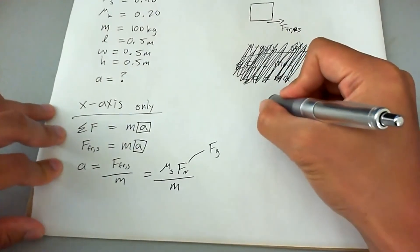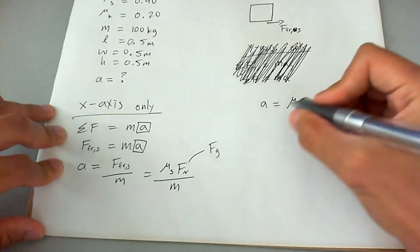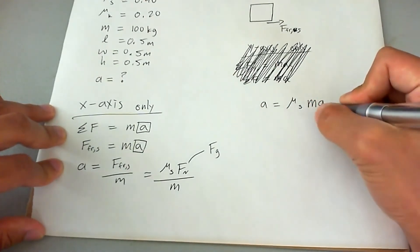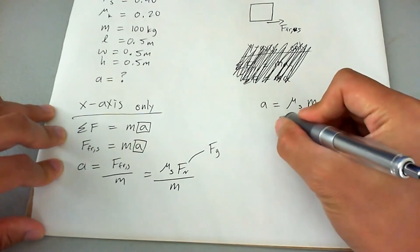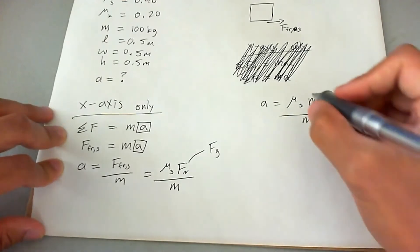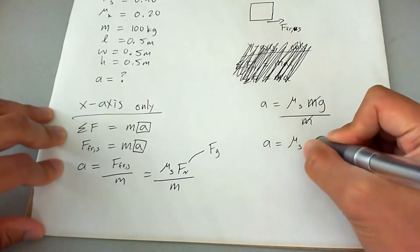So we can now say that acceleration is equal to μs times gravitational force, and gravitational force is simply mg. Now we're going to divide by M by bringing this denominator up here. This ends up being a lot simpler. It becomes μs times g.